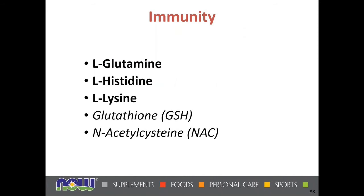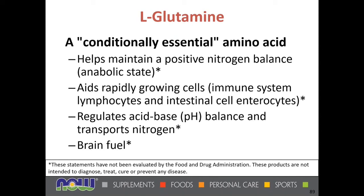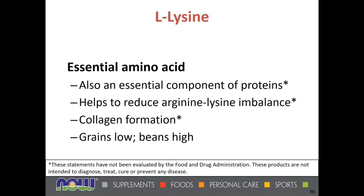Amino acids can also be used in immunity. L-glutamine is conditionally essential and helps maintain positive nitrogen balance in an anabolic state, which is why it's found in many bodybuilding formulas and protein powders — heavy exercise can use up what the body makes endogenously. It can also be helpful in recovery from injuries or burns. L-lysine is an essential amino acid that helps reduce the arginine-lysine imbalance created by certain foods like nuts and chocolate that favor higher arginine. Grains tend to be low in lysine, but beans are high in lysine.